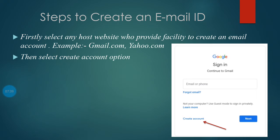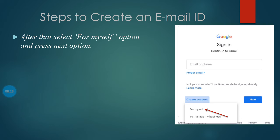Steps to create an email ID. Hum log email ID kaise create karte hain? Pehle koi bhi host website select kar lenge — chahe woh Gmail ho, Yahoo ho, ya Microsoft ho. Agar Gmail le rahe hain toh gmail.com likhenge, Yahoo le rahe hain toh yahoo.com. Jaise hi gmail.com enter karenge, screen par Gmail ka page aayega. Neeche create account ka option aa raha hai (arrow mark se dikhaya gaya). Is option par click karenge. Phir puchha jaayega — yeh account kis ke liye bana raha hai, business manage karne ke liye ya khud ke liye? Toh hum log select karenge 'For myself', uske baad Next button par click karenge.